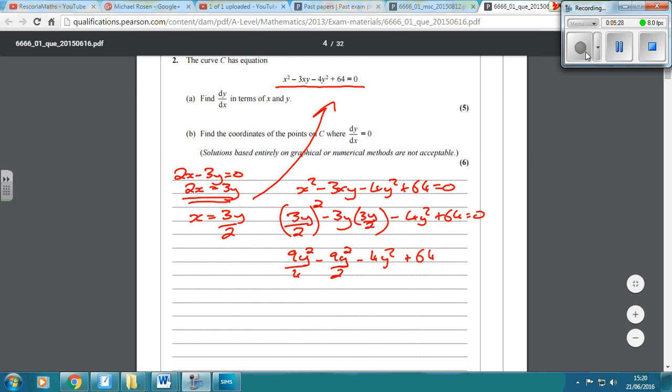Now, what I'd then do is I'd probably make everything over 4. So I'd make that 18 over 4. Make this one 16y squared over 4. So 9y squared take away 18y squared is going to be minus 9y squared. Take away 16 is going to be minus 25y squared over 4. That equals 64.